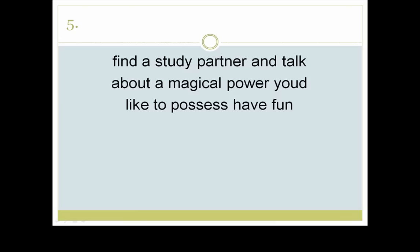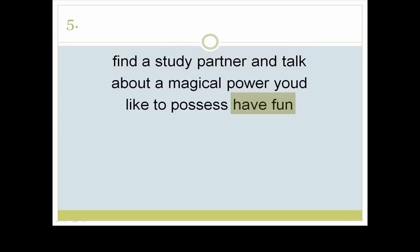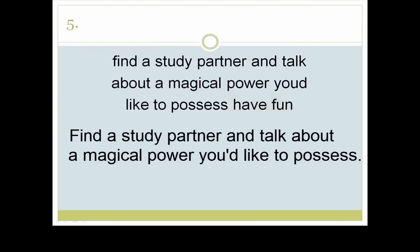Number five. Hopefully you've recognized the use of the imperative. Here we have an instruction, a direction, and then a request or invitation. 'Find a study partner and talk about a magical power you'd like to possess.' It starts with a capital letter and ends with a period. 'Have fun!' — start with a capital letter and end with an exclamation point. We also have a contraction — the short form of 'you would': 'you'd' — so we need an apostrophe.